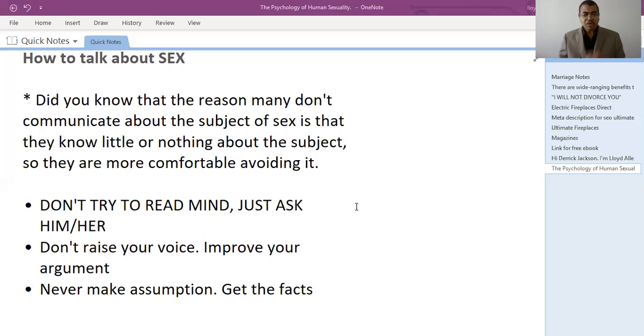In a nutshell, let me just rehearse what I just said. The three points on how to talk about sex. Number one, don't try to read mind. Just ask. Number two, don't raise your voice. Improve your argument. Read some good books. Get some information on the subject. When you are filled with knowledge on the subject, then you can talk about it intelligently and in a more meaningful manner. And number three, never make assumptions. Don't blame your wife or spouse before you get the facts. Because many times, 99% of the time, people are wrong when they make assumptions.